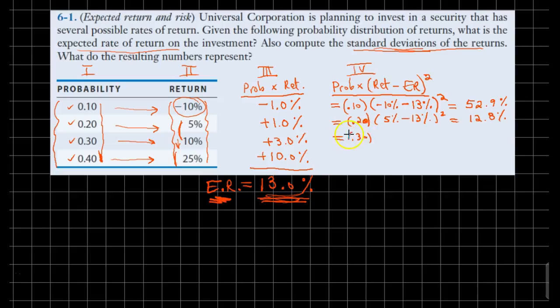For the third row, we have 30% chance that our return will be 10%. The average return does not change. Again, it's 13%. 10 minus 13 is minus 3. Minus 3 squared is 9. 30% of 9 would be probably 2.7%.